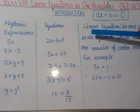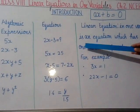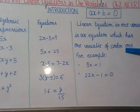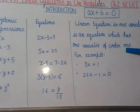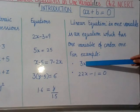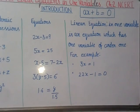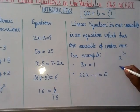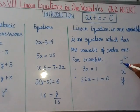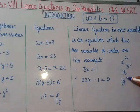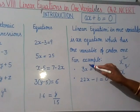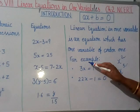Now, what are linear equations? Linear equations in one variable is an equation which has one variable of order one. Order one means the power of variable should be one always. For example, 3x equal to 1. Here, the variable is only x and the power of x is one. In linear equations, the variable must have only one power, and the equation should have only one variable.